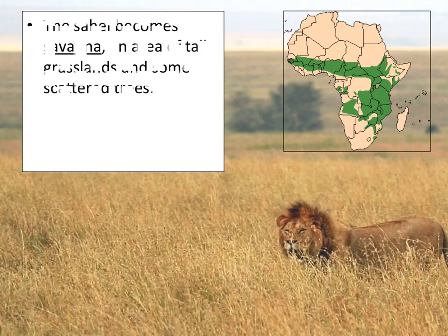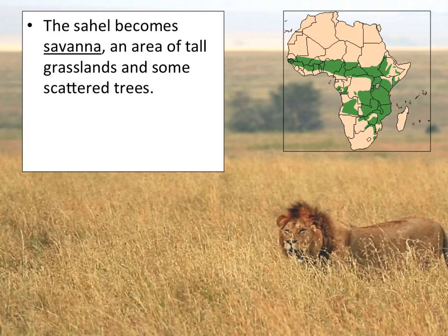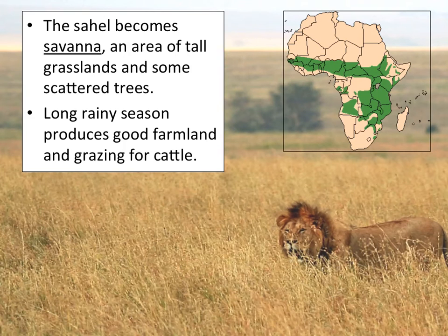The next region is called the Savannah, which is an area of tall grasslands and scattered trees. This area gets more water and has more vegetation than the Sahel, and therefore has a larger population because it can support more people. This is where a lot of wildlife safaris are. Africa is probably the most untamed continent on our planet — the most like the earth used to be before human beings had such an impact on it. The Savannah has a very long rainy season, making it a great place for farmland and grazing of cattle. In fact, Africa is starting to become a breadbasket for other parts of the world because the farmland there is so amazing.